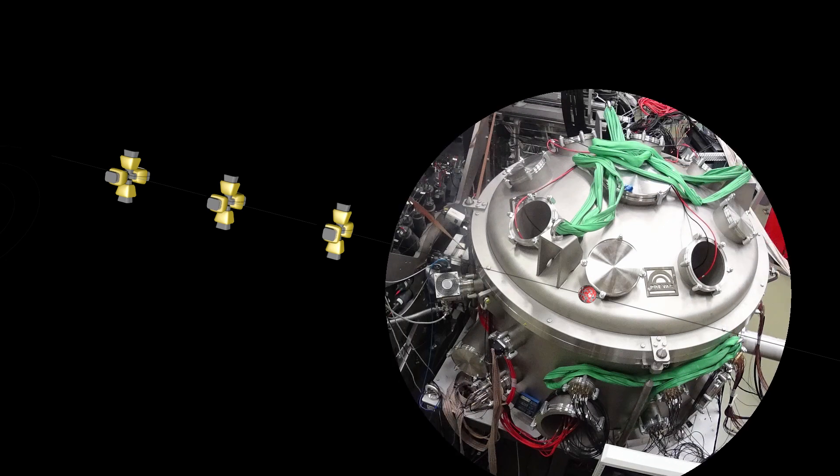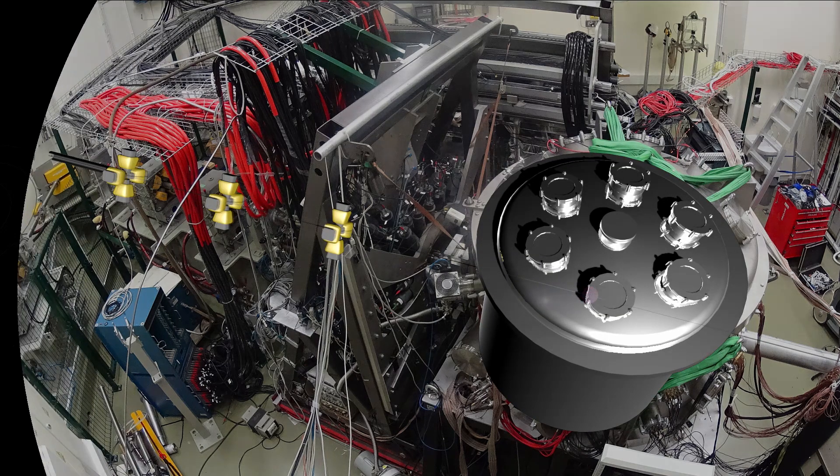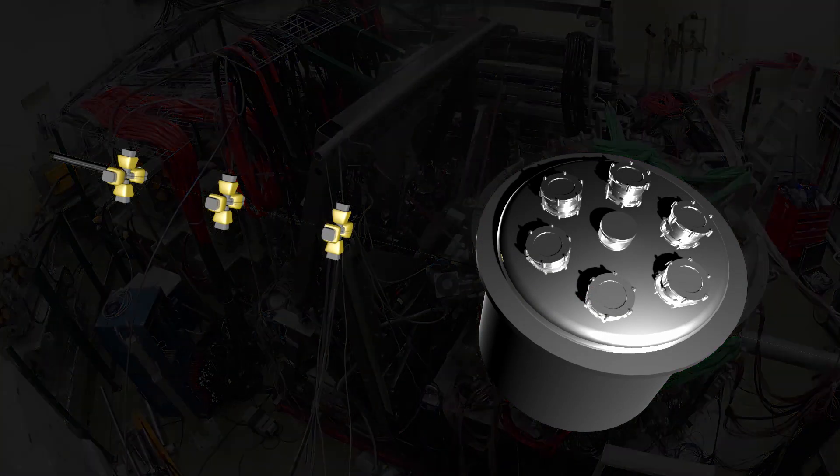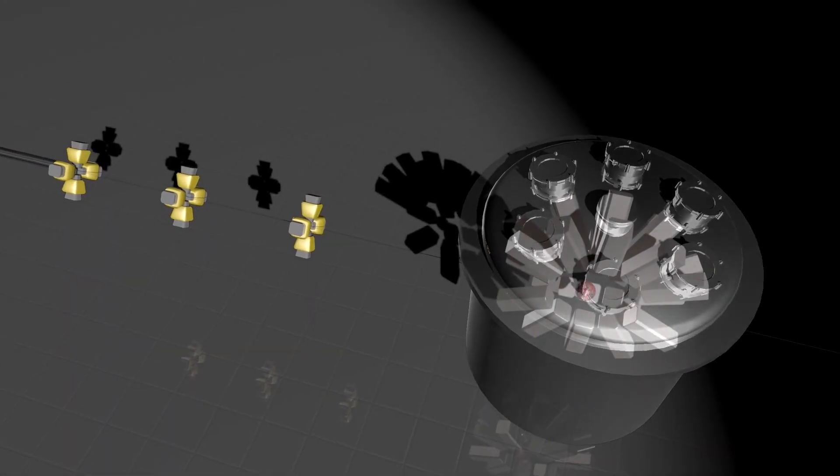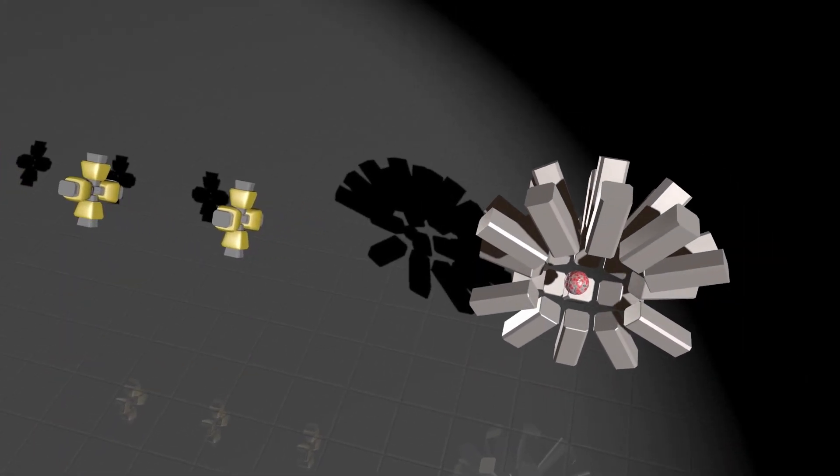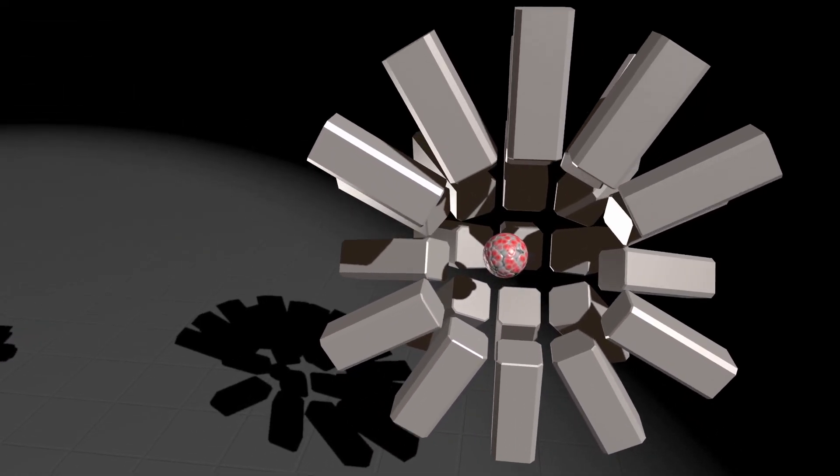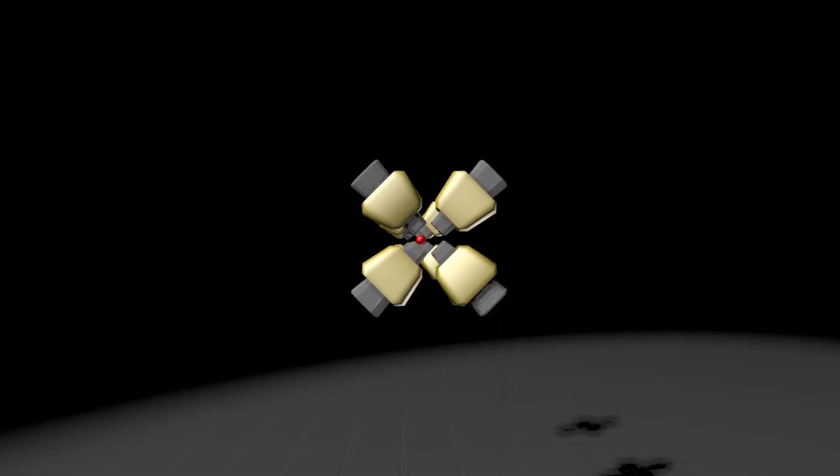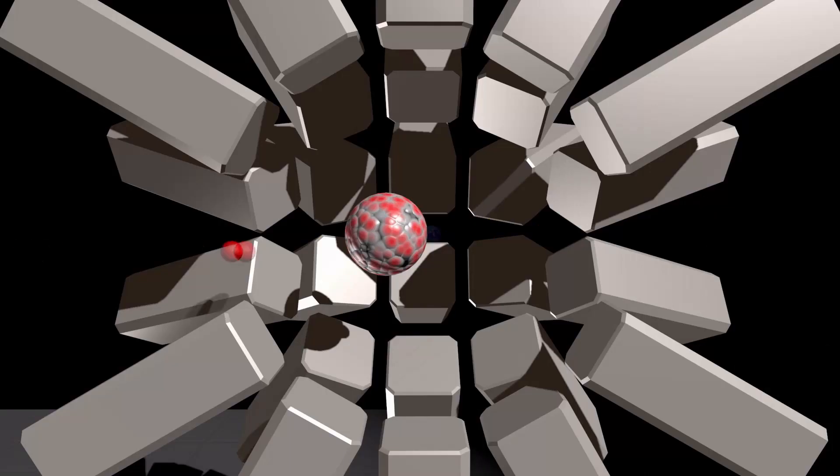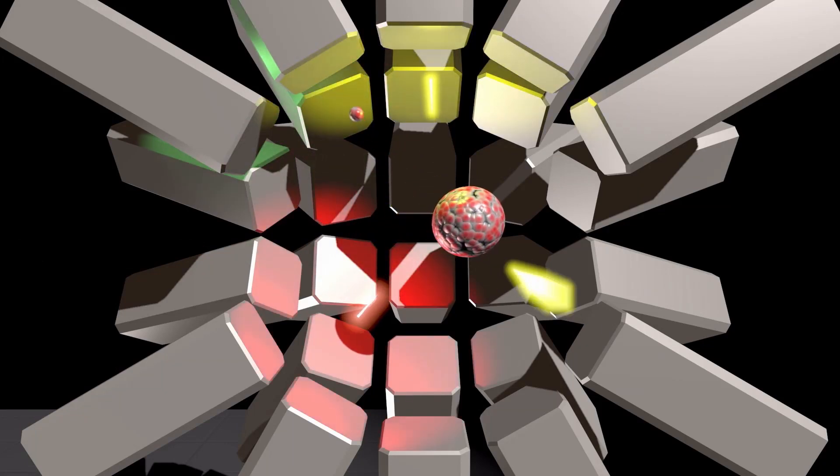W tej specjalnej komorze umieścimy płytkę z badanymi jądrami atomowymi. Jest ona otoczona zestawem różnych detektorów. Dzięki tym detektorom możemy się dowiedzieć, jak chętnie wzbudza się dane jądro i jakie kwanty gamma wysyła, by ze stanu wzbudzonego wrócić do stanu podstawowego.